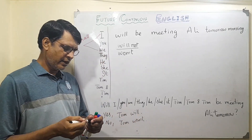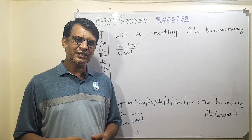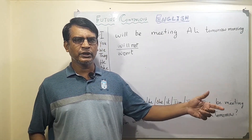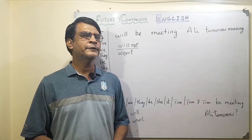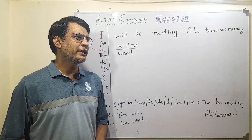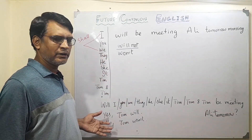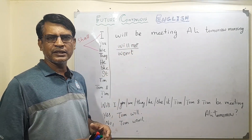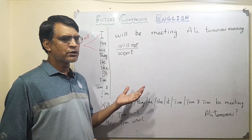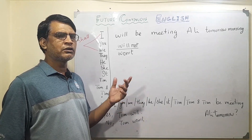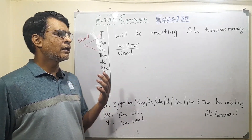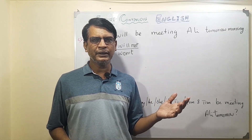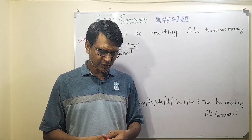To sum up, future continuous is about what will be happening in the future at a particular time. We use all subjects with 'will be' and a continuous form of the verb, which is also called the progressive form or the fourth form of the verb. Use future continuous for anything you want to talk about that will be happening in the future.